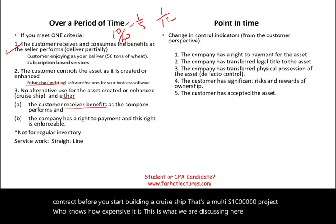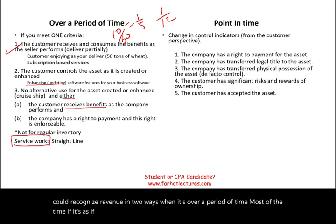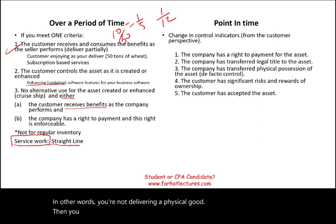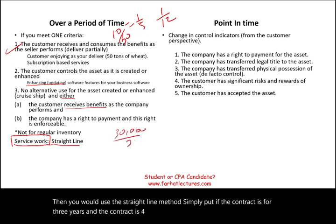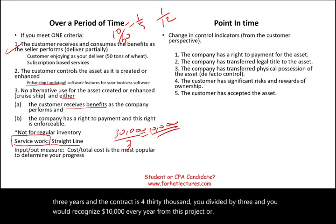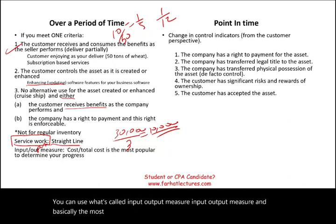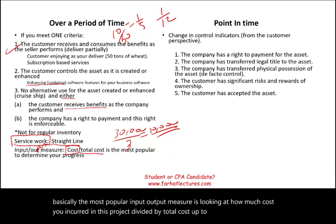You can recognize revenue in two ways when it's over a period of time. If the work is service in nature — you're not delivering a physical good — you would use the straight-line method. For example, if the contract is for three years and $30,000, you divide by three and recognize $10,000 every year. Or you can use the input-output measure, where you look at costs incurred divided by total estimated costs — that's the most popular method for recognizing revenue over a period of time.